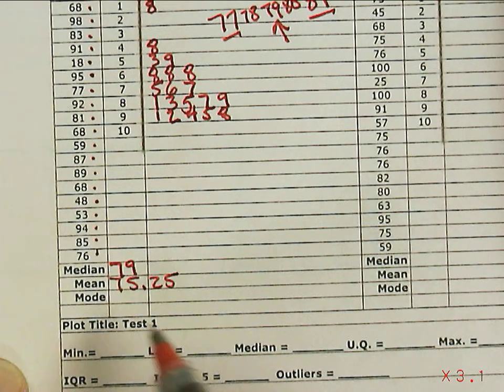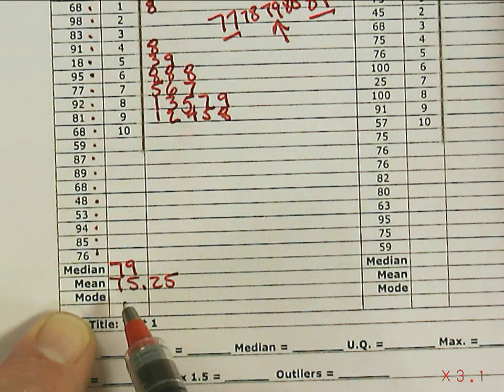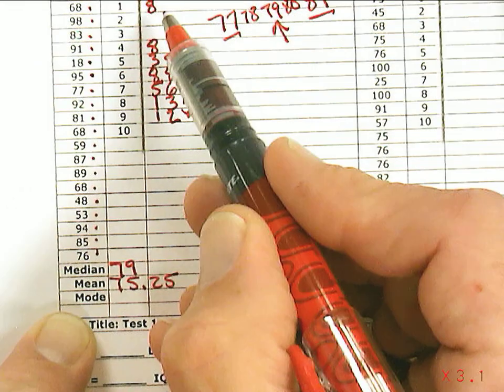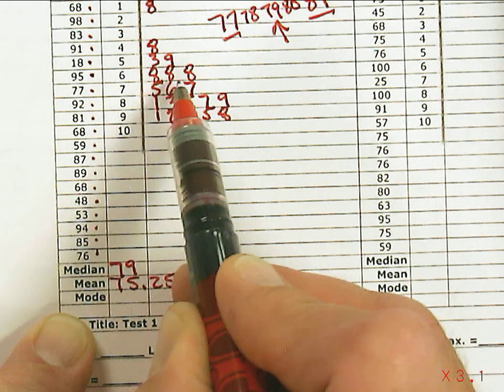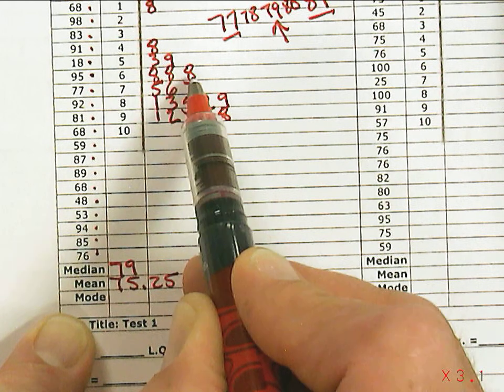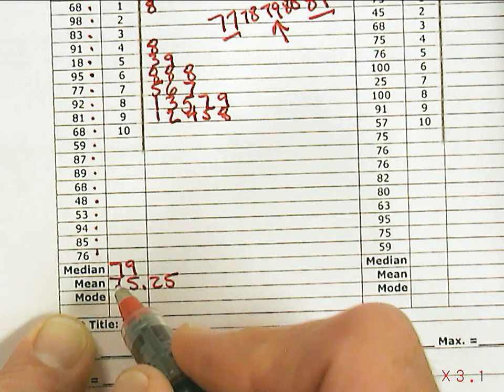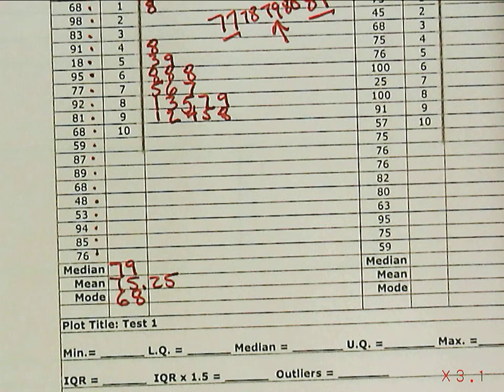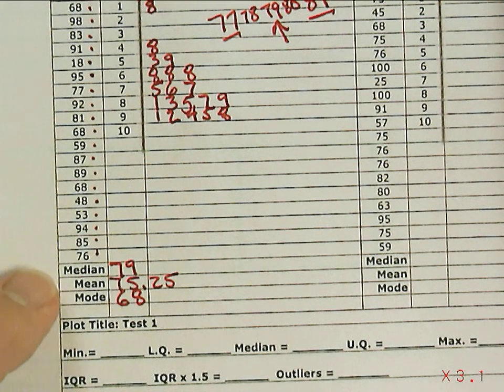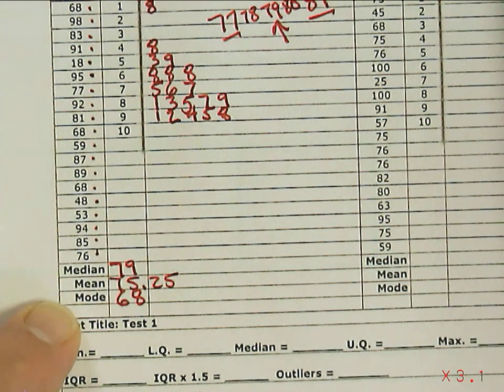The next question is what's the number that appears most often in the data set. If you look here, you can look for the one that has the most numbers repeated in the leaf, which in this case is the three 8s, which means that the mode is 68. It appears three times.